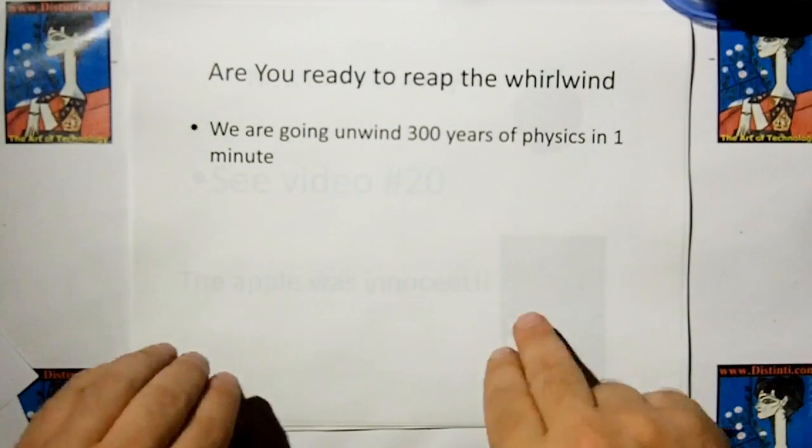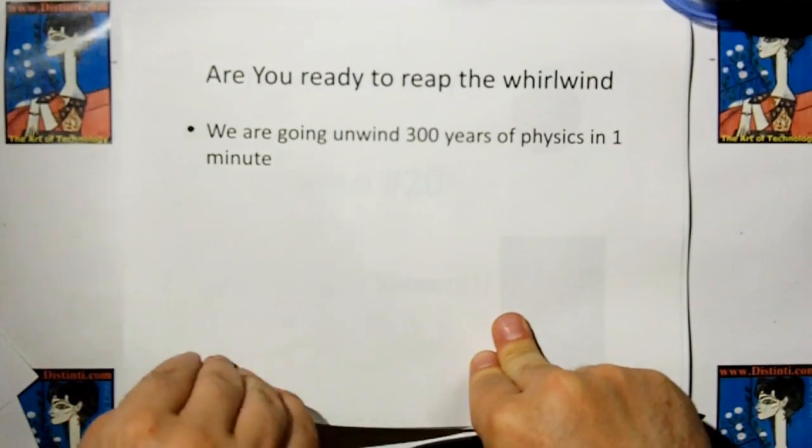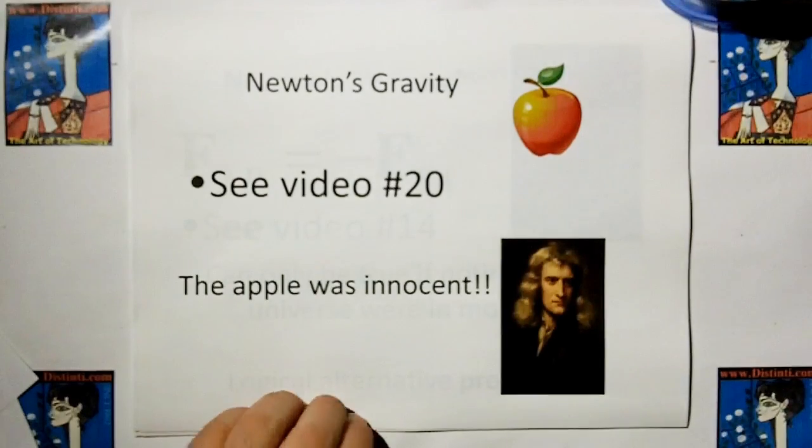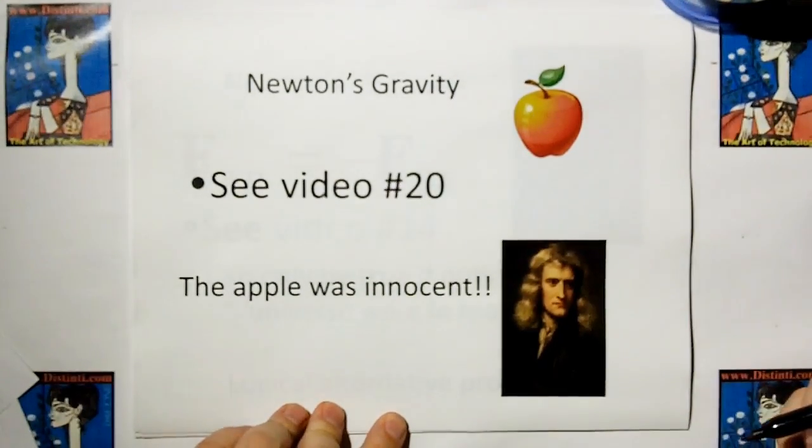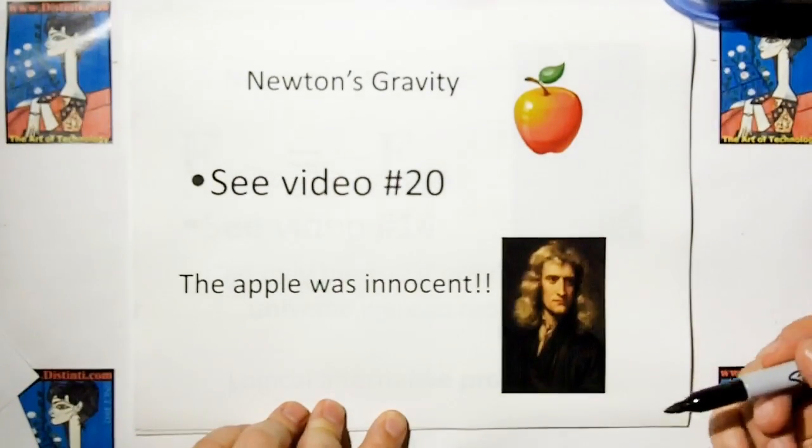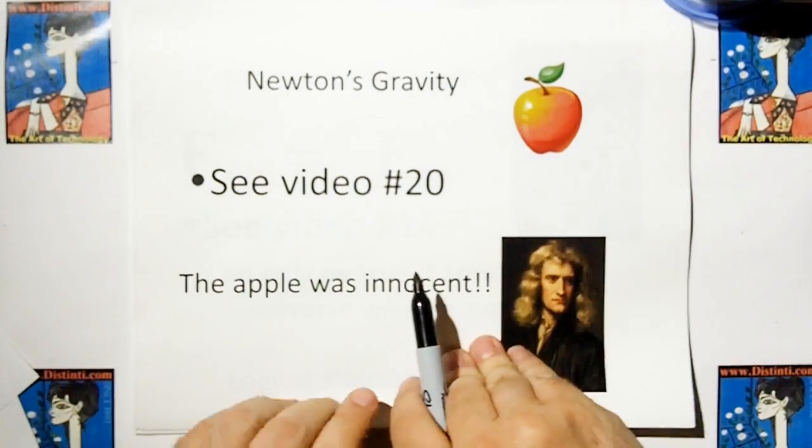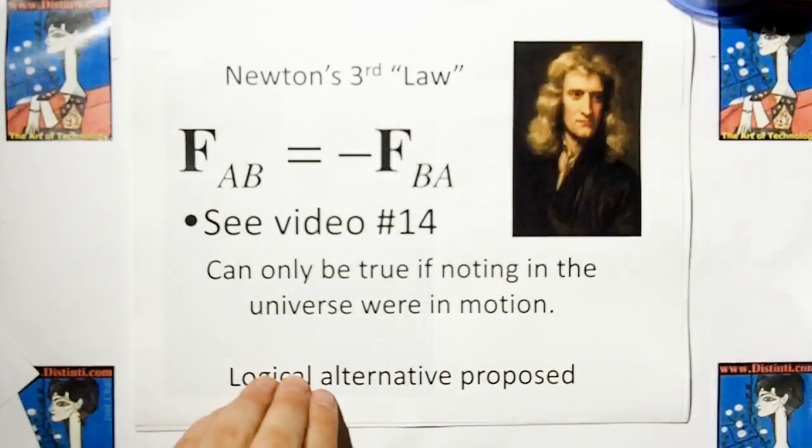Are you ready to reap the whirlwind? We're going to unwind 300 years of physics in one minute. Newton's gravity: If you put an accelerometer on Newton and an accelerometer on the apple, it's Newton that's accelerating, not the apple. The apple is innocent. Go see video 20 if you want to see that in more detail.